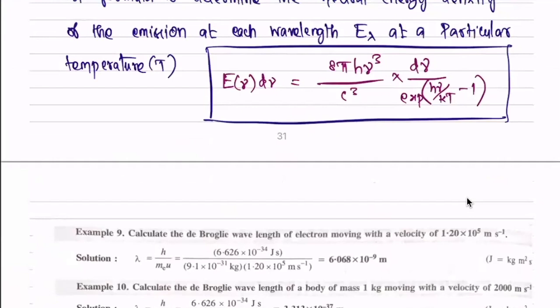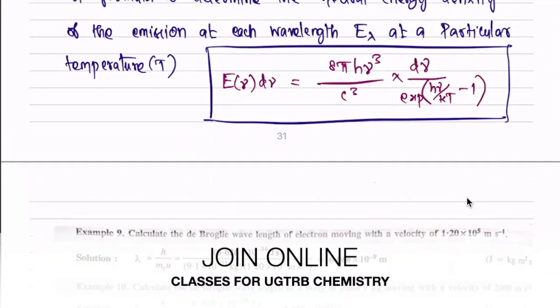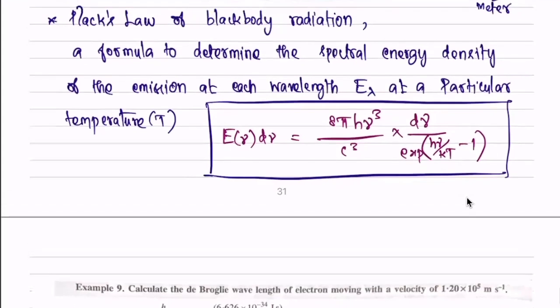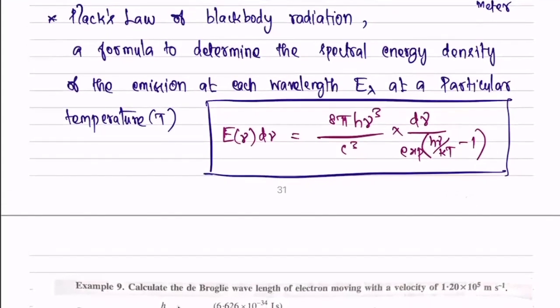There are two problems. We will see both of them. Calculate the De Broglie wavelength of an electron moving with a velocity of 1.20 × 10⁵ meters per second.